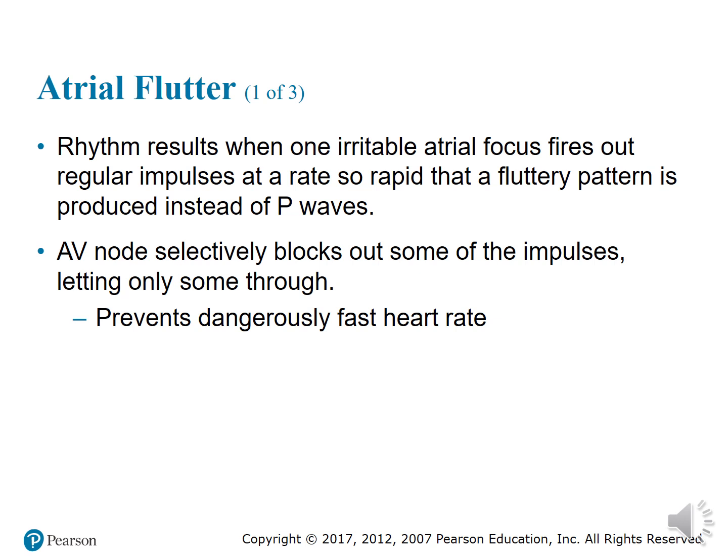The AV node is the gatekeeper, the protector of the ventricles. Impulses must pass through it to reach the ventricles. Impulses that are too fast would provide a dangerous fast heart rate, so the AV node selectively blocks out some of the impulses, letting only some get through.